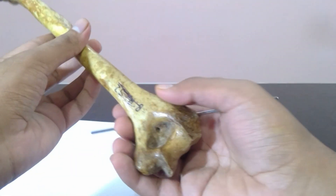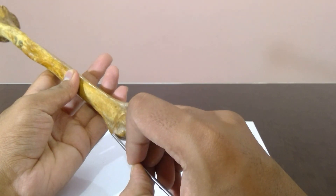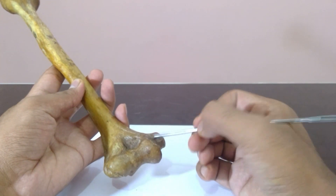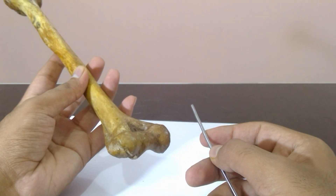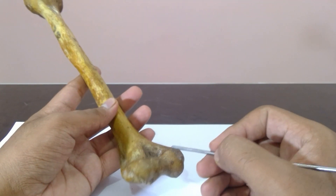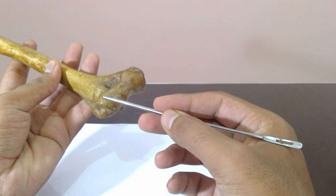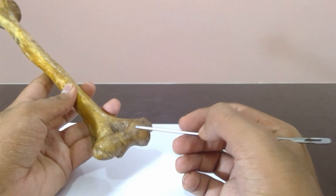The inferior end of the humeral shaft widens at the sharp medial and lateral supraepicondyle ridges, and distally there is the prominent medial epicondyle and the lateral epicondyle, which provide attachment for muscles. The distal end of the humerus, including the trochlea, capitellum, olecranon, coronoid and radial fossae, makes up the condyle of the humerus. The condyle has two articular surfaces: a lateral capitellum for articulation with the head of the radius, and a medial spool-shaped trochlea for articulation with the proximal end of the ulna.